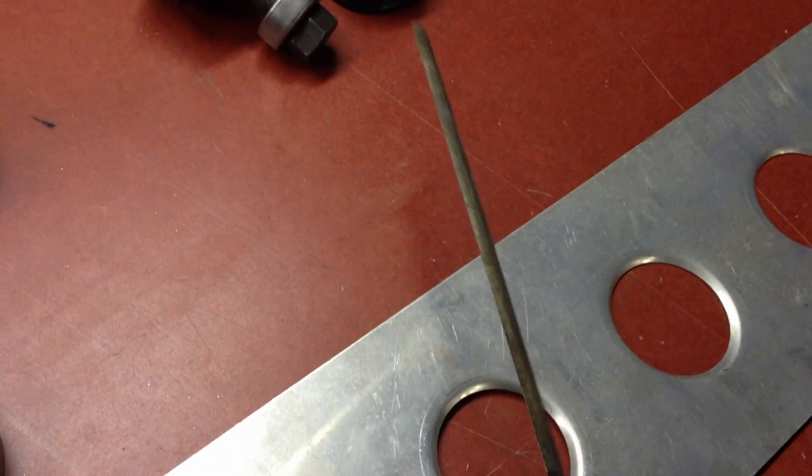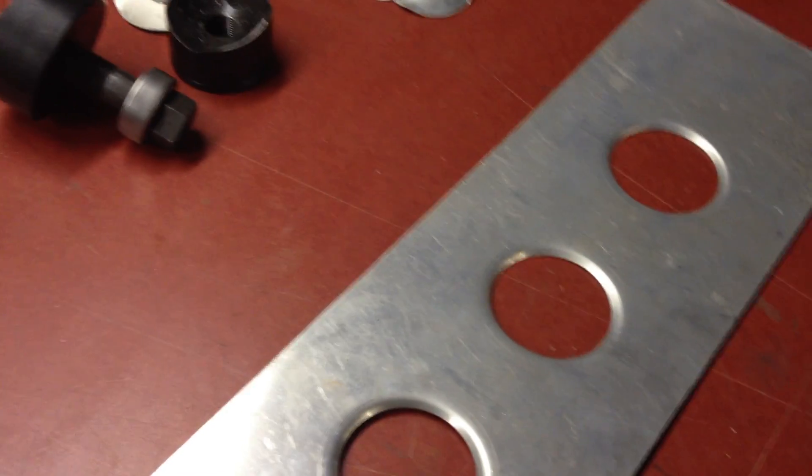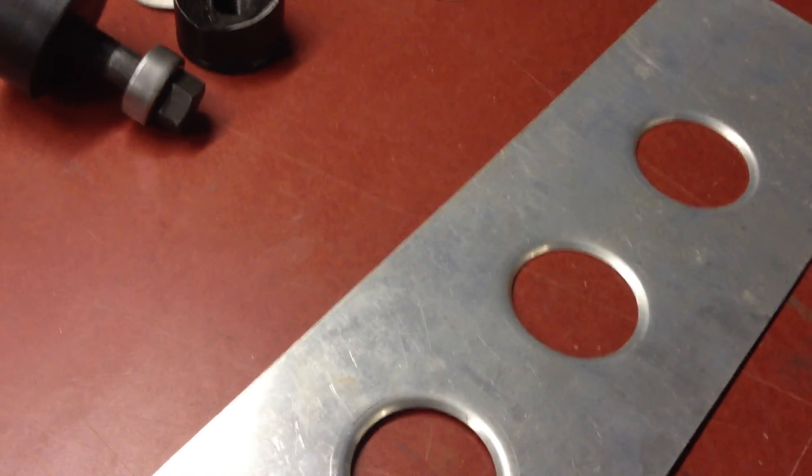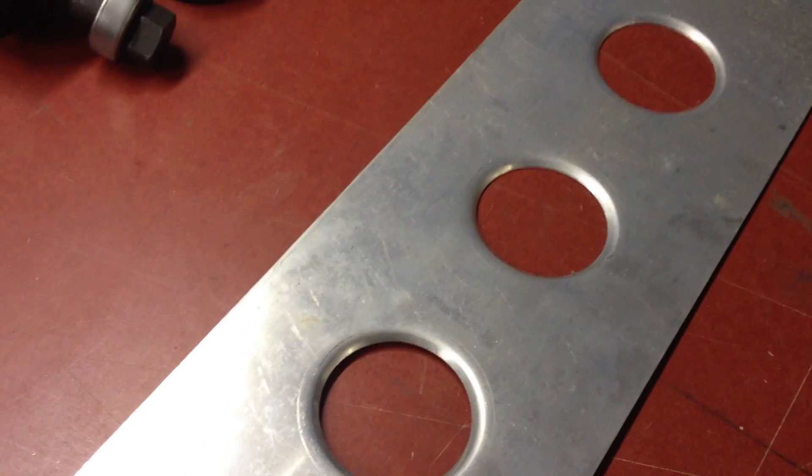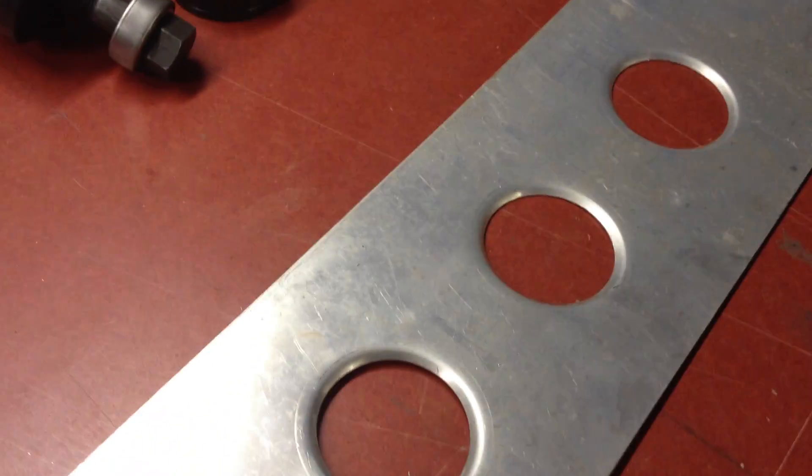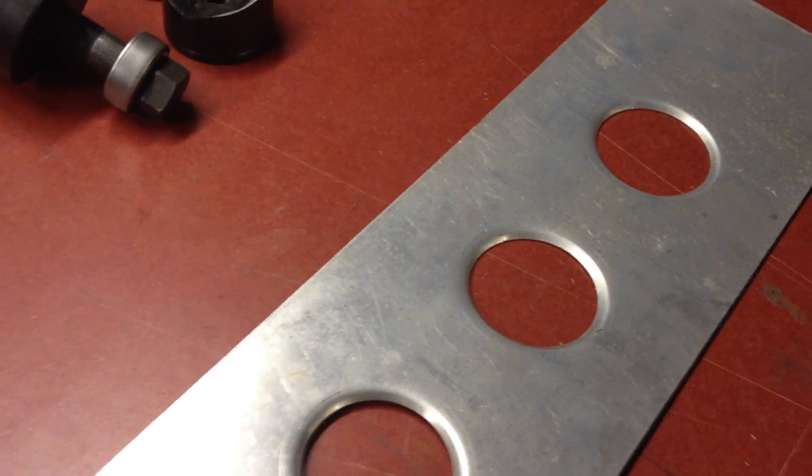Once you have the holes, you want to go in with a half-round file and just deburr them a little bit. The reason for that is when we put our flaring tool in, it tends to get stuck in there if you leave the burrs on. Do it right now so your flaring tool won't get stuck in the hole.